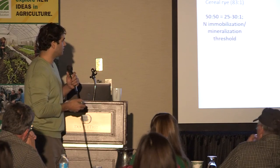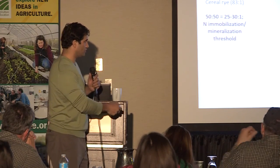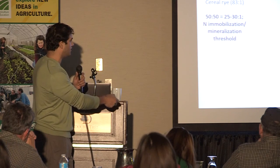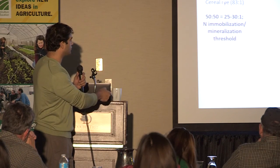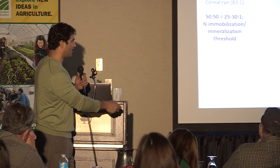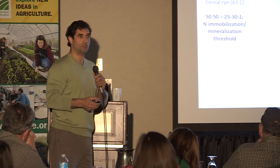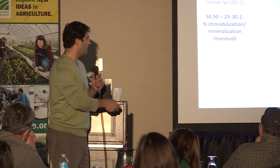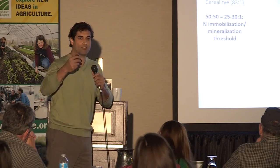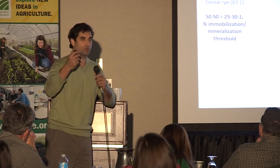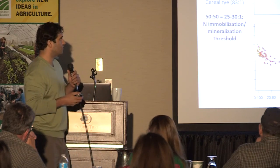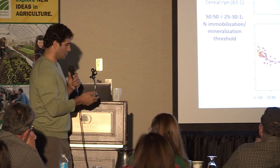Let's break down C:N ratios. Hairy vetch is about 16:1, and cereal rye is 83:1. This is that continuum — how the C:N ratio changes as a function of the proportions. At that 50-50 mixture, you're getting really close to that threshold of N immobilization versus mineralization, where you start to get the release of nitrogen.